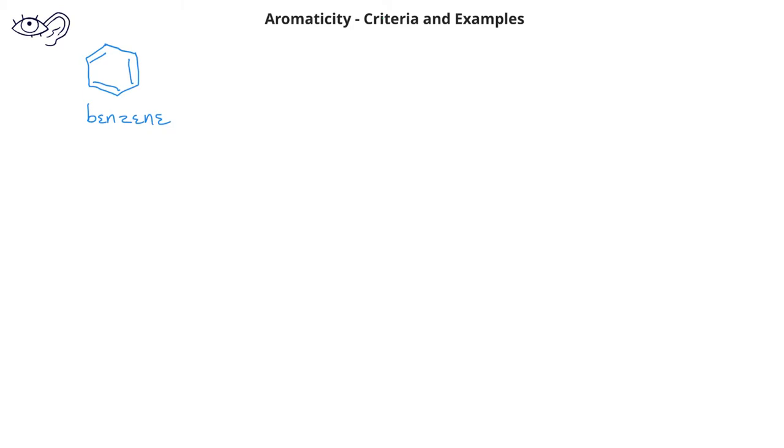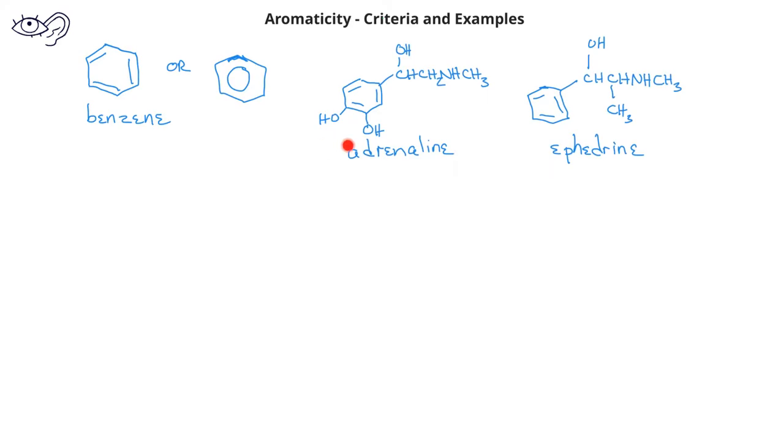When we were learning about delocalized electrons, we were introduced to the molecule benzene, which has six carbons and six hydrogens. Although we draw the structure with alternating single and double bonds, we can also represent the delocalized electrons by putting a ring inside of a hexagon. There are many natural compounds which are derivatives of benzene and have that six-membered ring inside of them. Adrenaline and ephedrine are just two of these naturally occurring compounds.